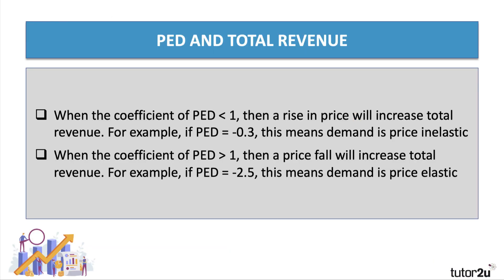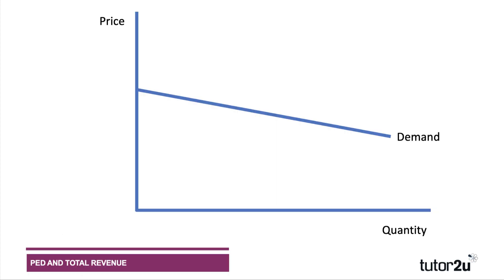In contrast, if you have a very high coefficient of elasticity — say 2.5 (anything more than one is elastic) — then a 10% fall in price will lead to a 25% increase in demand, leading to revenue going up. This applies to a fairly elastic demand curve or average revenue curve.